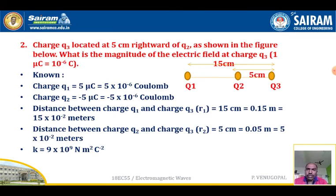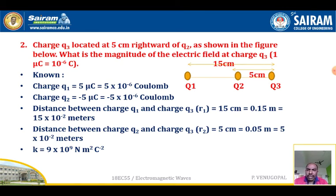Next problem: Charge Q3 is located 5 centimeters rightward of Q2. What is the magnitude of the electric field at charge Q3? Q3 equals 1 micro-coulomb. Given: Q1 equals 5 micro-coulombs (5 times 10 to the power minus 6 coulombs), Q2 equals minus 5 times 10 to the power minus 6 coulombs. Distance between Q1 and Q3 is 15 centimeters or 0.15 meters. Distance between Q2 and Q3 is 5 centimeters or 0.05 meters. k equals 9 times 10 to the power 9 newton-meter-squared per coulomb-squared.